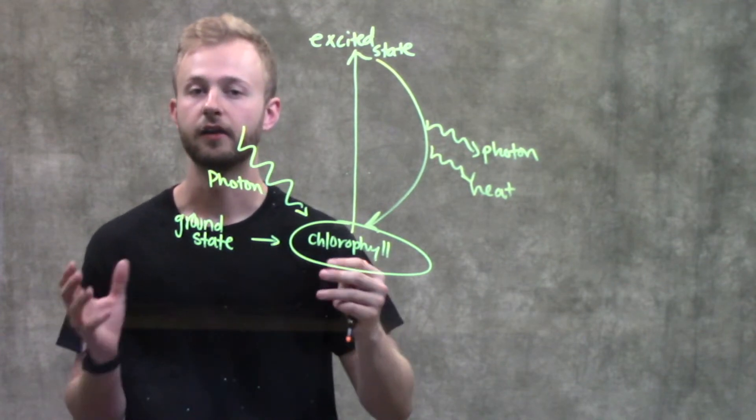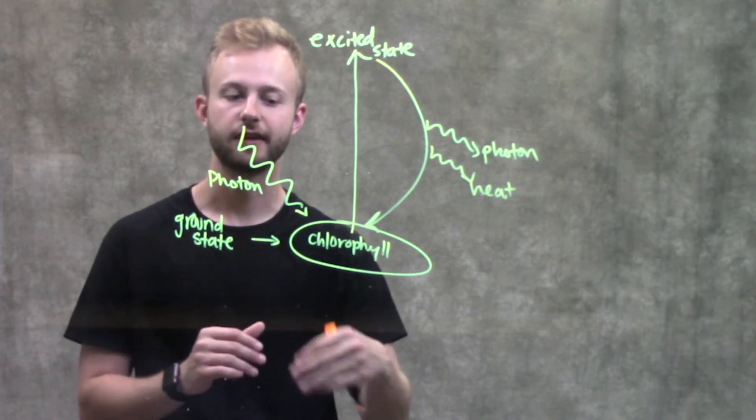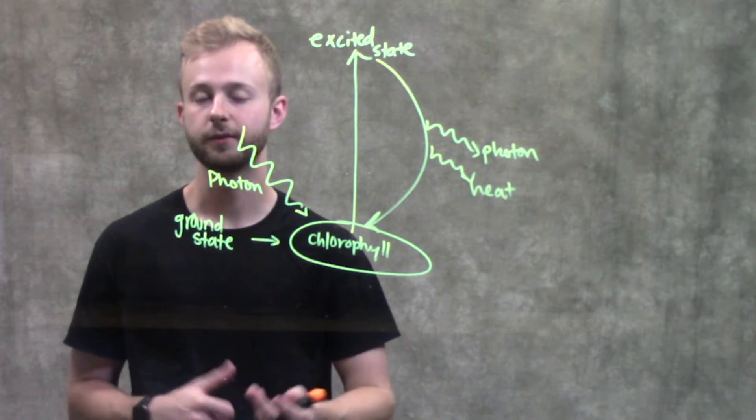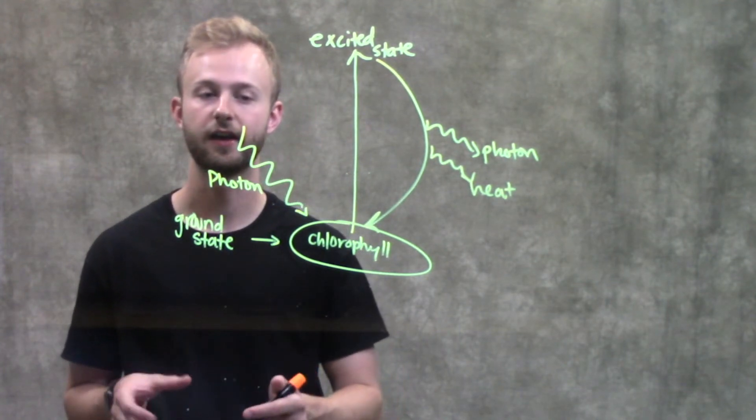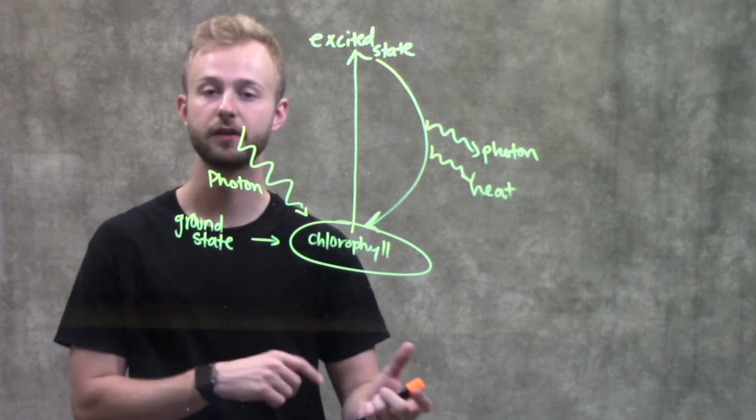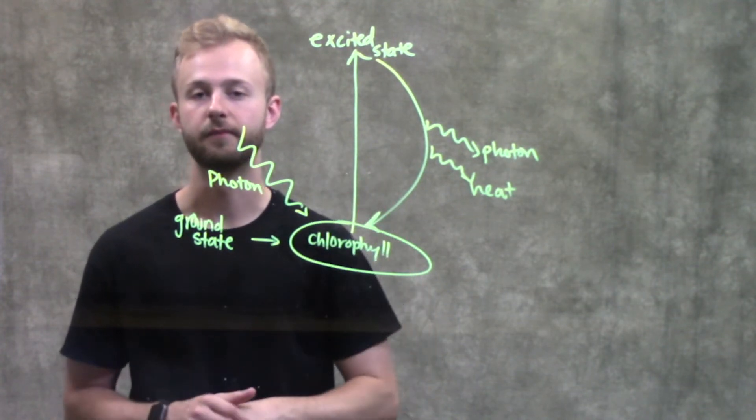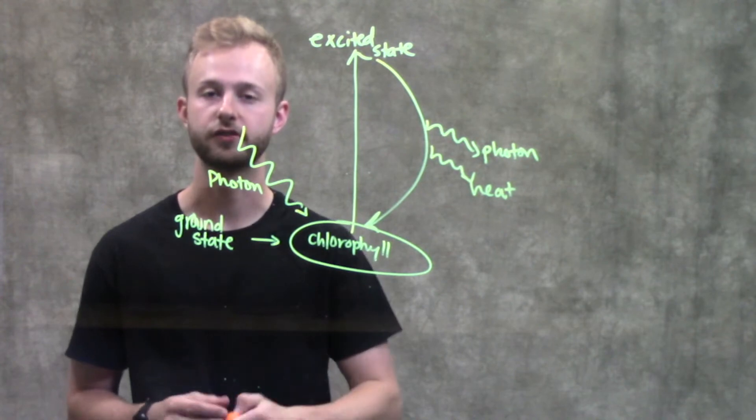This understanding of photons being used to excite electrons in photosynthetic pigments is really important, especially when we get into the photosystems and seeing how these electrons are passed from pigment to pigment and then ultimately excited to go on to the next photosystem.